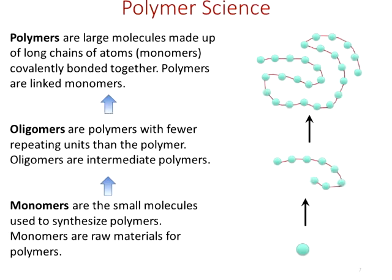Those monomers will form their first connections to form what's called oligomers. Oligomers are polymers with fewer repeating units — essentially baby polymers, short chain polymers. Oligomers are intermediate polymers; some will call them pre-polymers. They're shorter chains of the final polymer that will be developed.